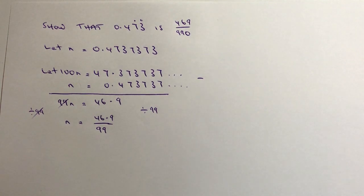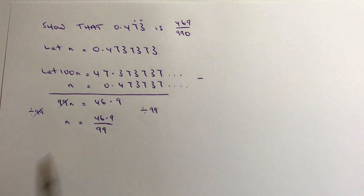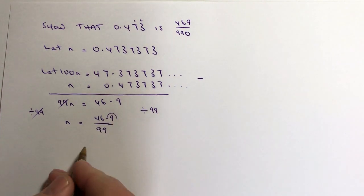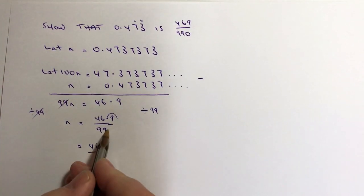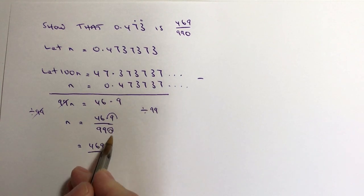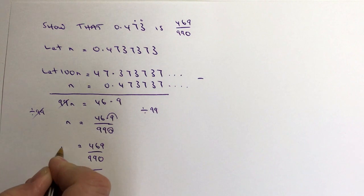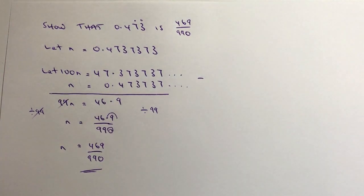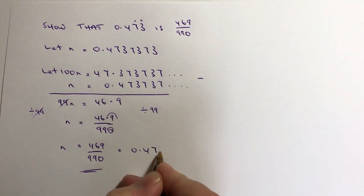Now that's not particularly good — it's a bit of a mix of a decimal and a fraction. So all we need to do is simply move the decimal point one place. If I move the top one place I end up with 469, and if I move the bottom one place I have to put a 0 in as a placeholder, giving 990. So n equals 469 over 990, which equals 0.473 recurring.